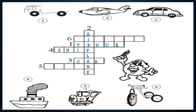We continue with number five: train — this is a train. And finally, we have here a bicycle. So: number one — truck, number two — airplane, number three — car, number four — ship, number five — train, and number six — bicycle.